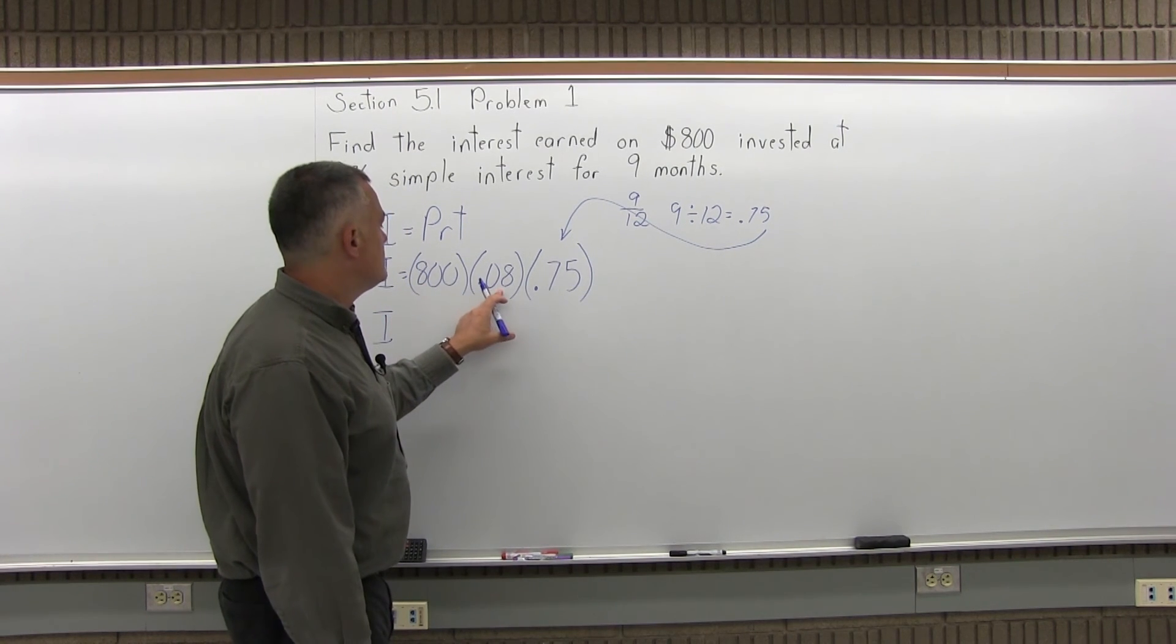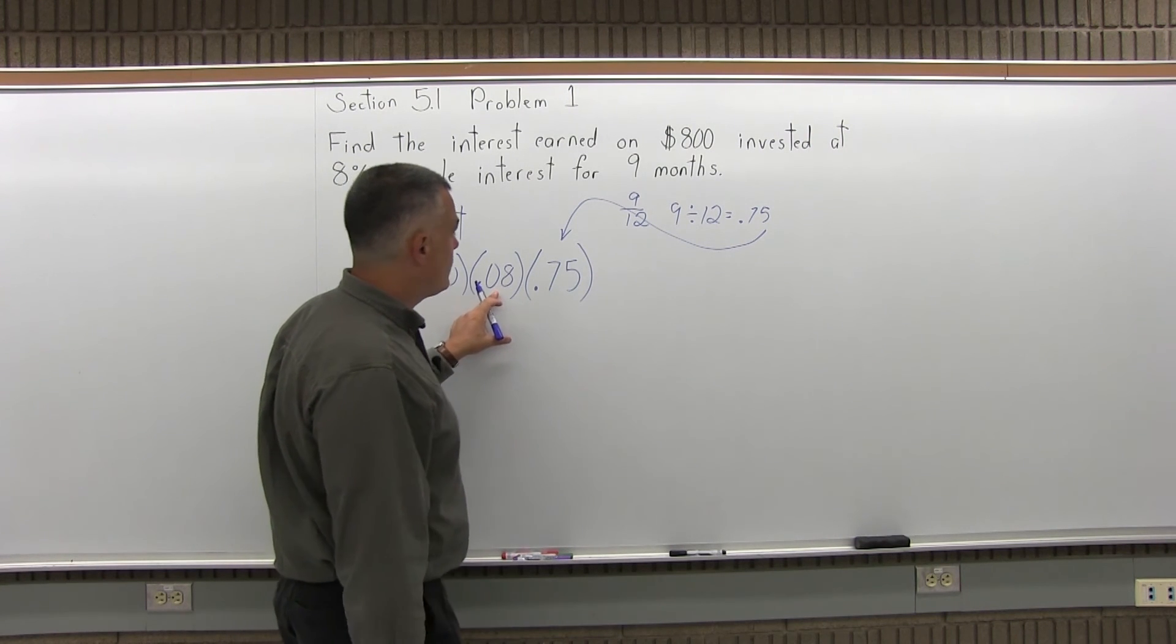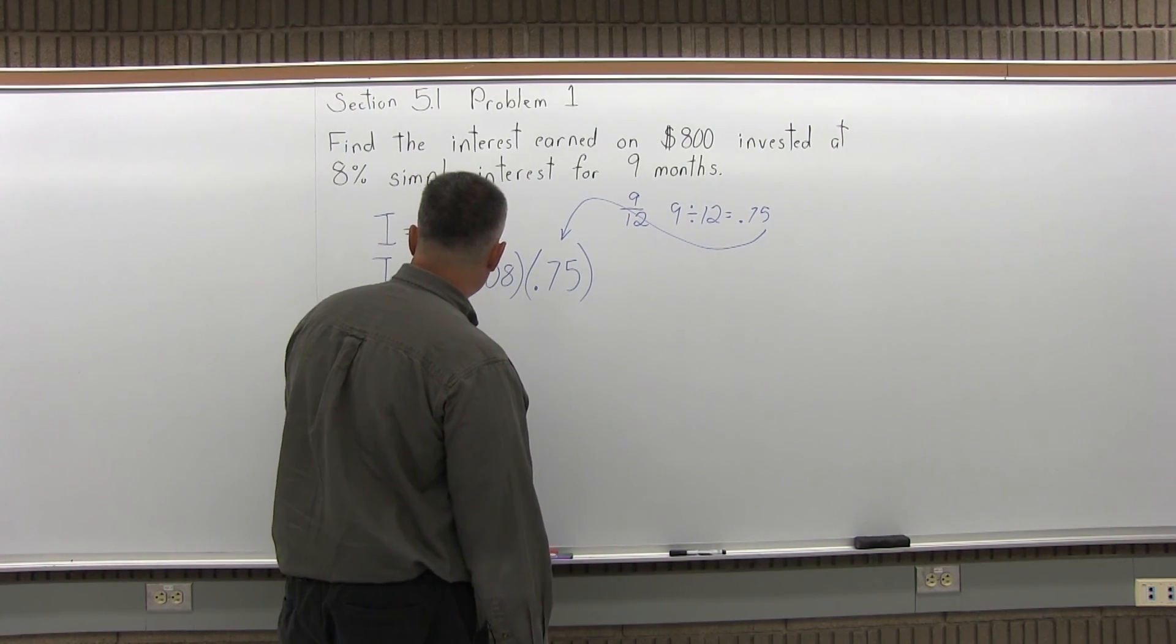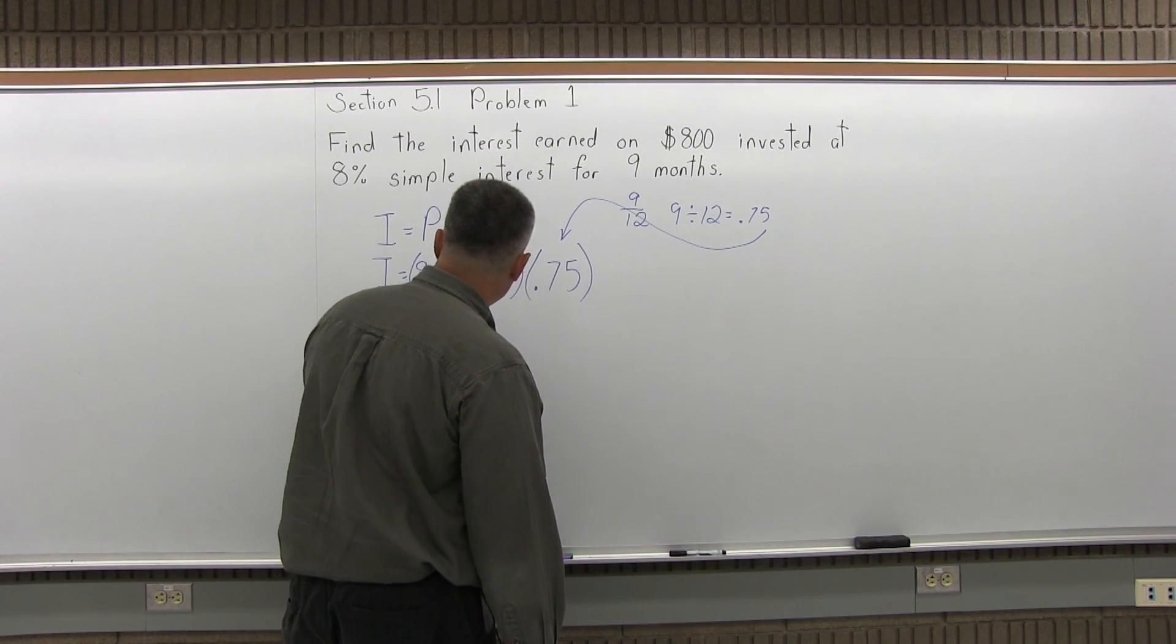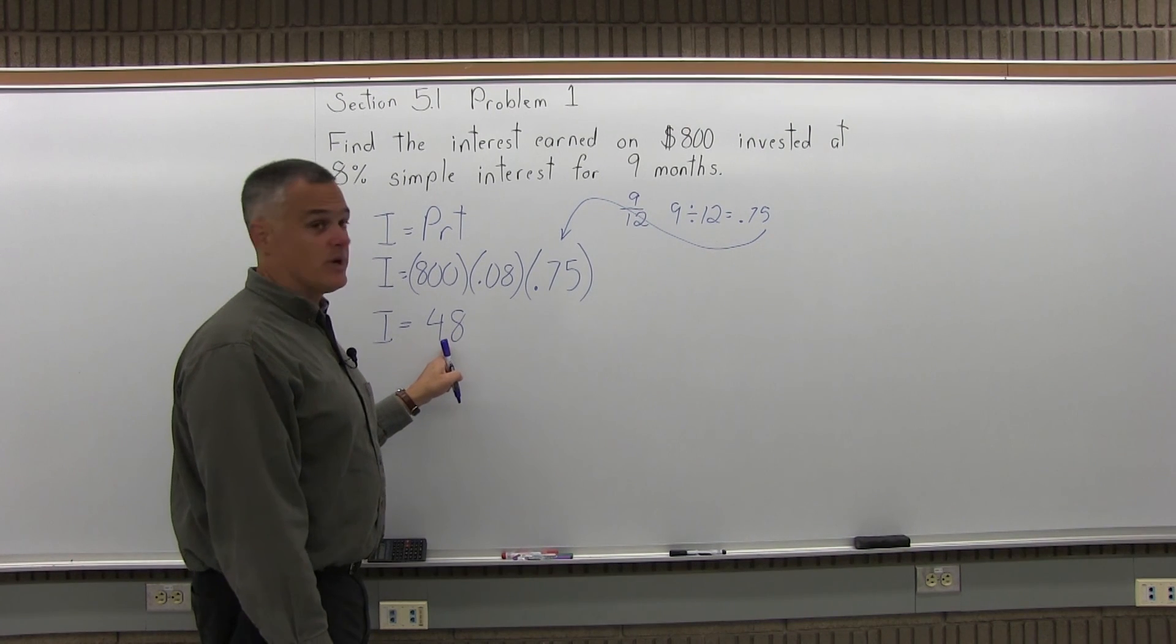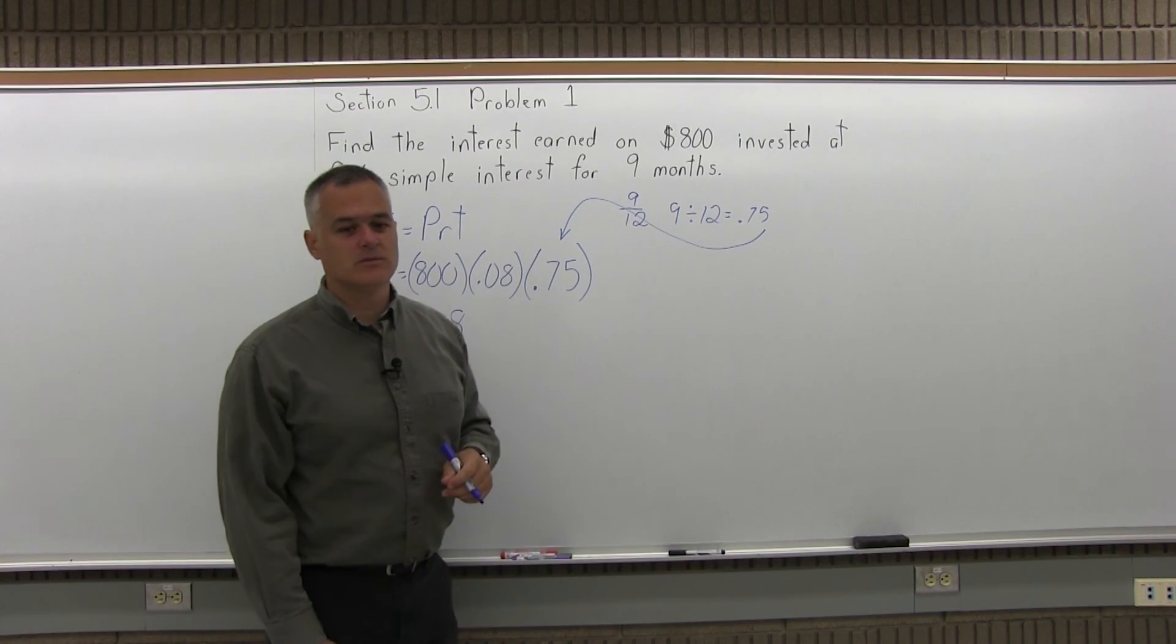So 800 times 0.08 is going to be 64. You can do that on your calculator. And then 64 times 0.75 comes out to 48. So the interest earned on $800 in 9 months is $48 at 8%.